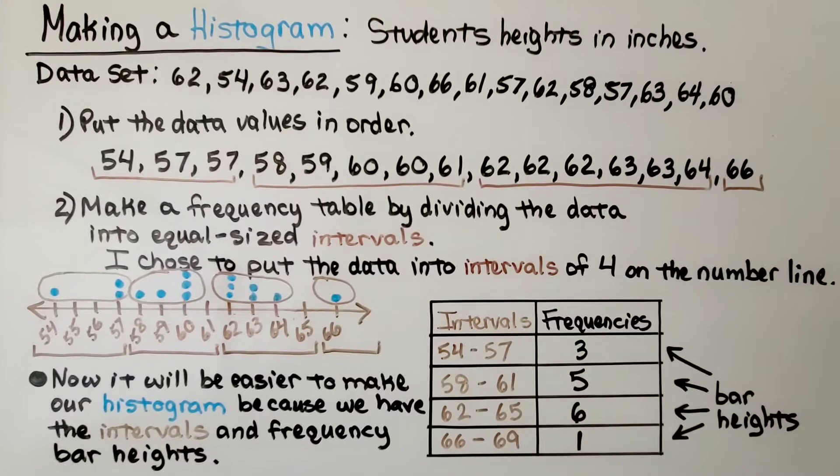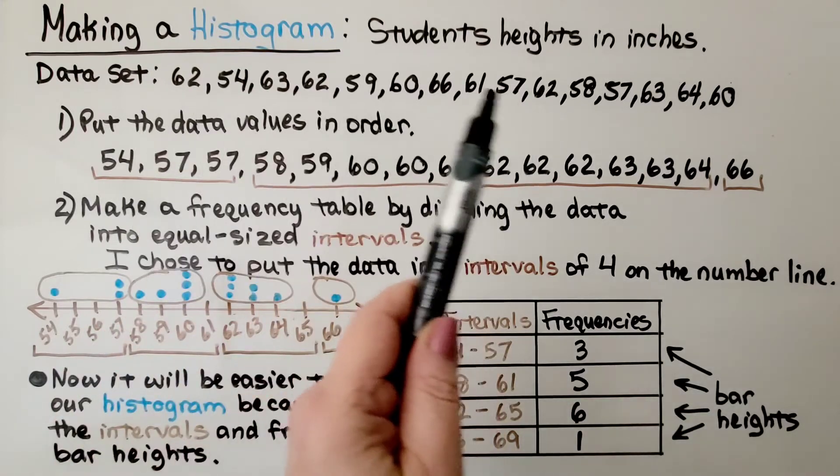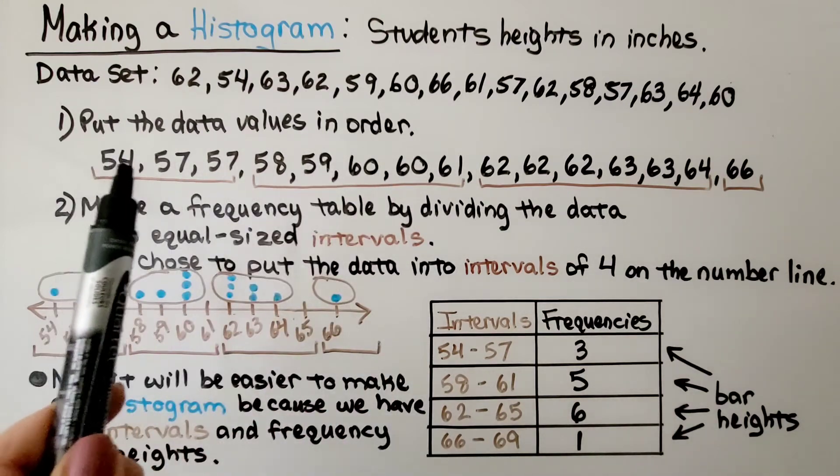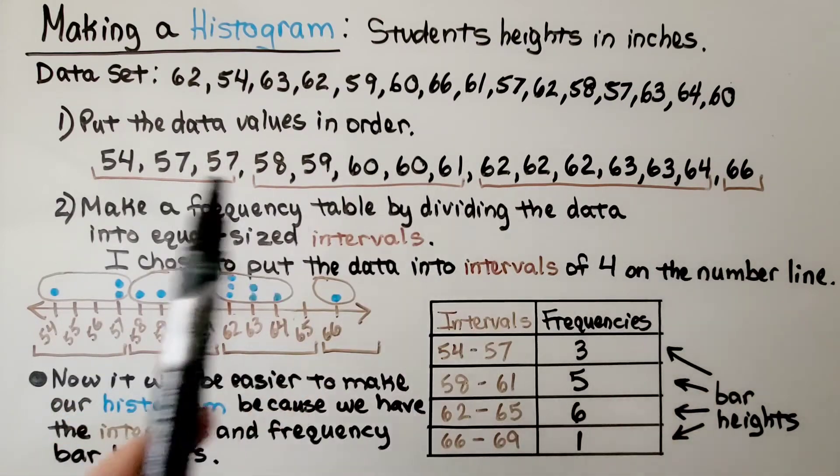So this is how to make a histogram. We have our data set, and it's students' heights in inches. We put the data values in order. I put them in order from least to greatest.